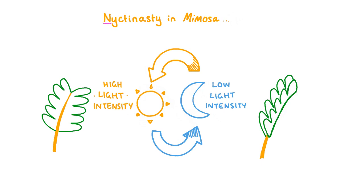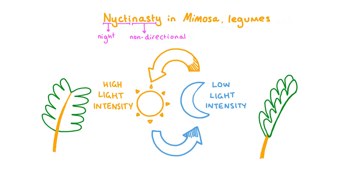This type of movement is called nyctinasty, or sleep movement. The prefix 'nyct' means night. Like thigmonasty, this is a non-directional response. A similar process is observed in other plant leaves like those of legumes, drooping at night and returning to their upright position in the morning. The benefits of sleep movements are not fully understood, but one theory suggests that drooping of leaves at night helps reduce surface area to prevent excess water loss through transpiration. Sleep movements may also deter herbivores by making plants appear smaller or wilted.